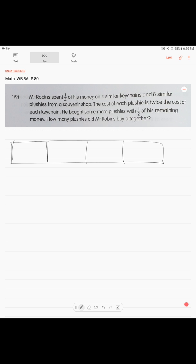He spent this one unit, one-fourth of his money. He spent on eight plushies and four keychains. So this is the first thing.